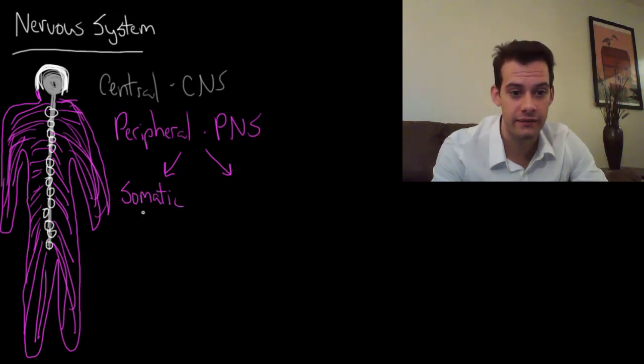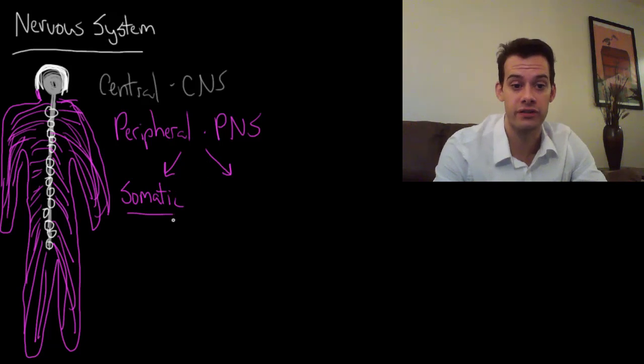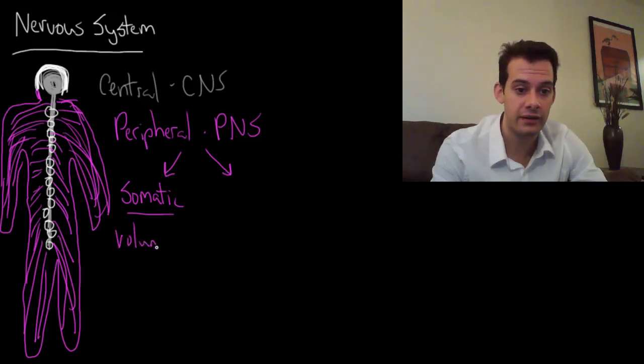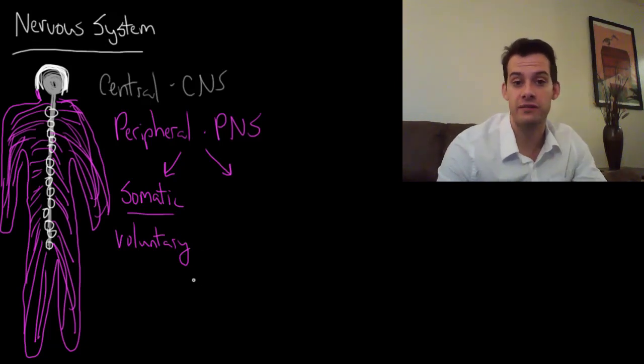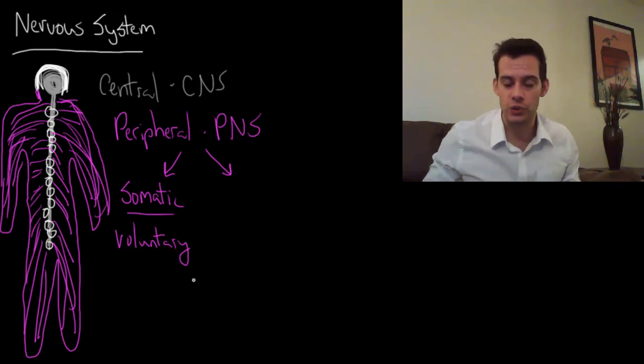There's some stuff that we have control over. That's the somatic division of the peripheral nervous system. The somatic division is anything that is voluntary—your skeletal muscles and the nerves that connect to them. You can voluntarily choose to move those muscles in a number of ways.